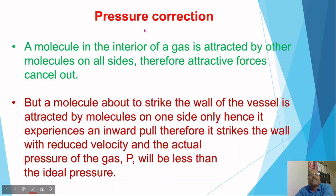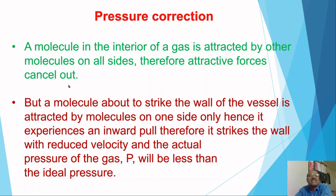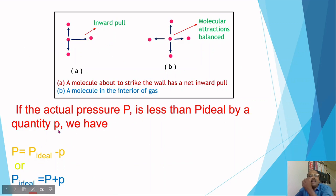Pressure correction: a molecule in the interior of the gas is attracted by other molecules on all sides, therefore attractive forces cancel out. But a molecule about to strike the wall of the vessel is attracted by molecules on one side only. Hence it experiences an inward pull, therefore it strikes the wall with reduced velocity, and the actual pressure of the gas P will be less than the ideal pressure. This diagram shows a molecule about to strike the wall experiencing a net inward pull.